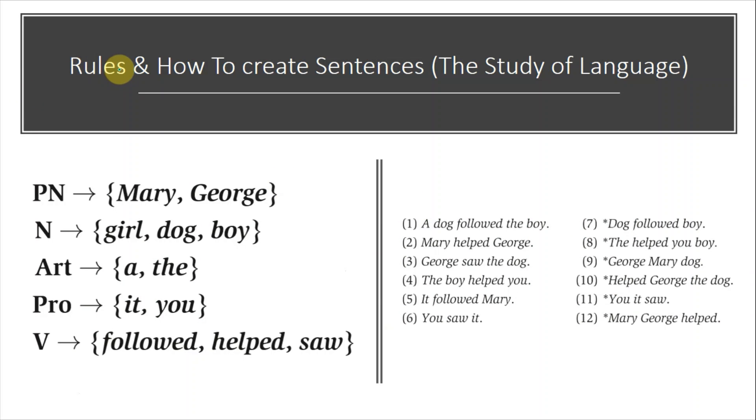Now we will look at some rules and examples taken from The Study of Language. For proper nouns, there will always be a name. This is a lexical rule. For common nouns, we have simple words like girl, dog, boy.